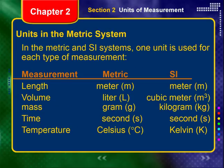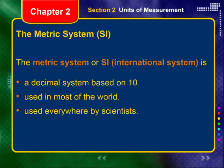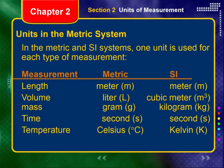The metric system is very closely related to the SI system. SI stands for international system — that's why the S and I are switched around. It is a decimal system based on the number 10, which makes conversions very simple. It is used in most of the world. Only two or three countries use anything other than the metric system, and the United States is one of them. However, scientists working in the United States still use the metric, or SI, system.